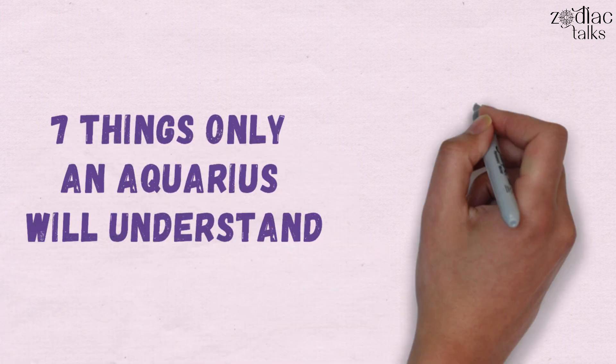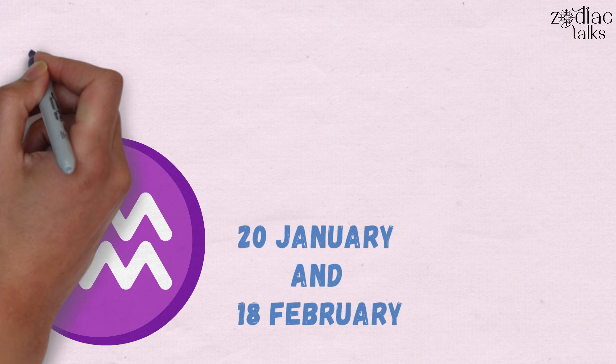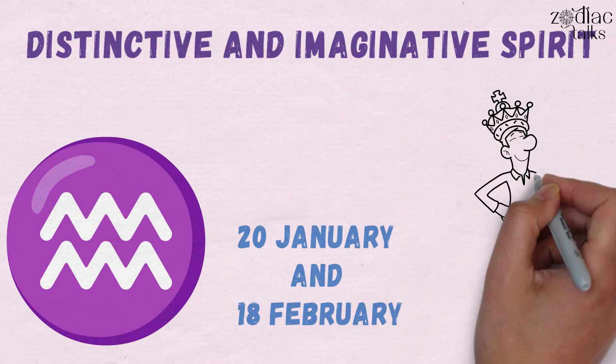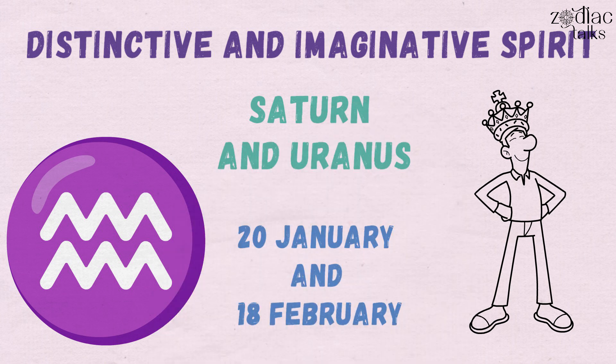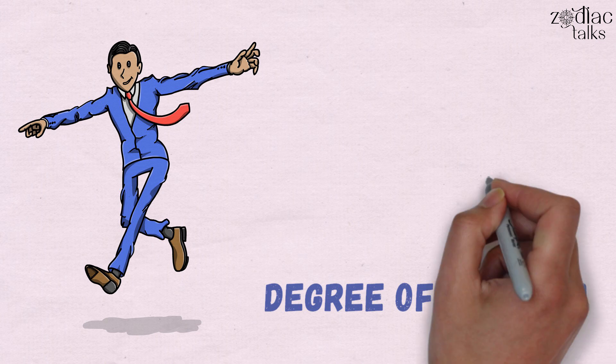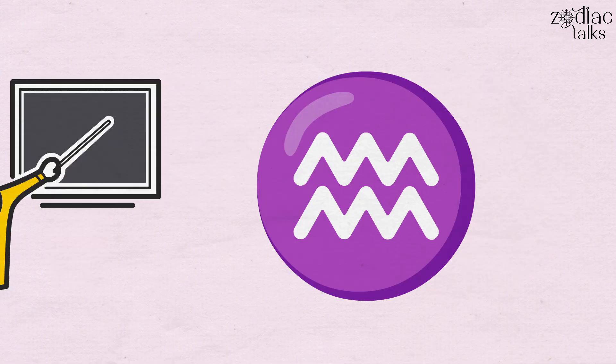7 Things Only an Aquarius Will Understand. You're an Aquarius if you are born between the 20th of January and the 18th of February. You can pour your distinctive and imaginative spirit into effective work because you're ruled by both Saturn and Uranus. You also appreciate your independence and require some degree of freedom in your life to do as you choose. Here are 7 things that only an Aquarius would understand.